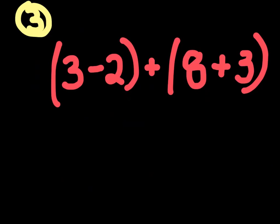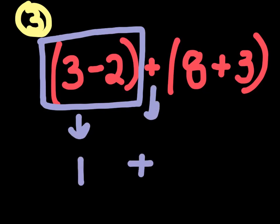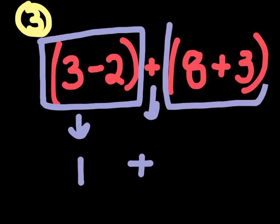All we have to do is do what's inside the parentheses first. So let's look at the first set of parentheses. This set right here. So in this set, we have 3 minus 2. 3 minus 2 is just 1. So we would bring down a 1. Bring down the addition sign.